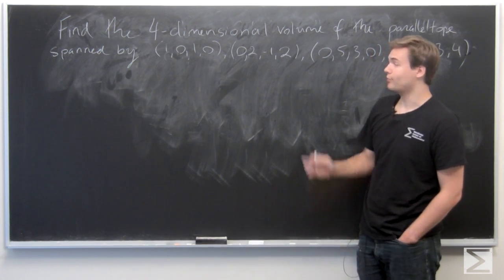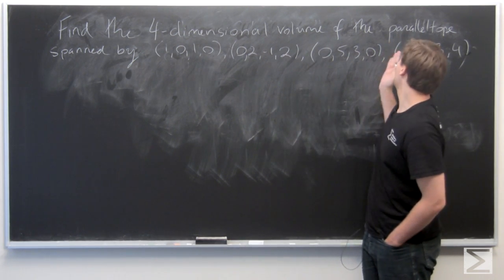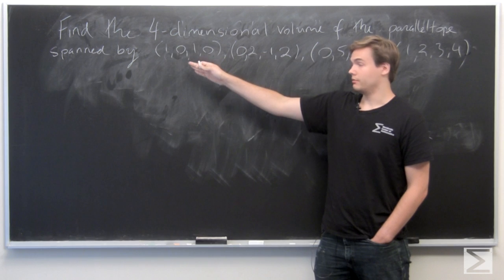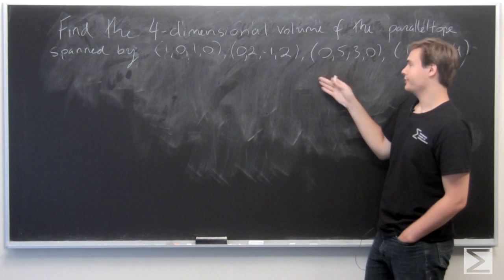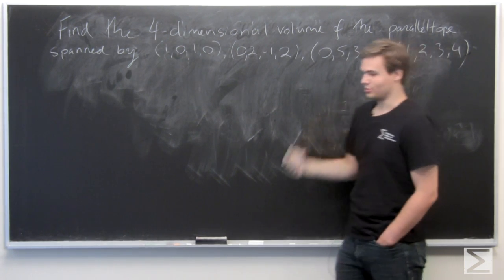In this problem, we want to calculate the four-dimensional volume of the parallelepiped spanned by the vectors (1, 0, 1, 0), (0, 2, -1, 2), (0, 5, 3, 0), and (1, 2, 3, 4).